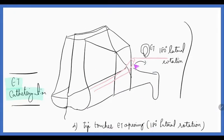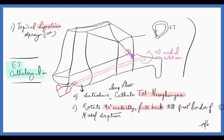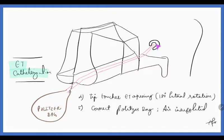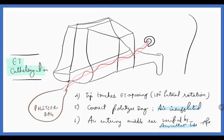After that, we are again doing a rotation of 180 degrees laterally to reach the opening of Eustachian tube. After this 90 degree medial rotation, then reaching the posterior tip of the nasal septum, then rotating 180 degrees laterally, we are touching the Eustachian tube opening. At that point, we are connecting with the Politizer bag, compressing it and increasing positive pressure that enters the Eustachian tube. This positive pressure goes to the middle ear cavity and reaches the tympanic membrane causing bulging. We can hear that sound using an auscultation tube. This is Eustachian tube catheterization.